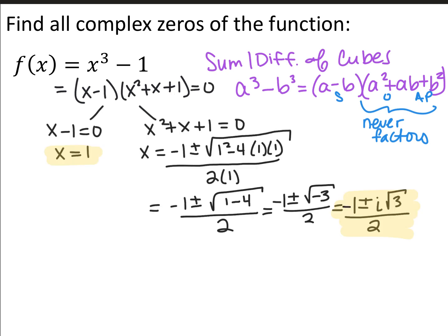Now that I have this factored, I set the whole thing equal to 0 and set each factor equal to 0 from the zero product property. So x minus 1 equals 0 gives x equals 1. x squared plus x plus 1 equals 0 does not factor, so I use the quadratic formula: x equals the opposite of b plus or minus the square root of b squared minus 4ac all over 2a. Once I plug everything in, I get negative 1 plus or minus the square root of negative 3 over 2. In the past you would say no solution, but we want all zeros including imaginary ones. So I pull out the square root of negative 1, call that i, and get negative 1 plus or minus i root 3 over 2.